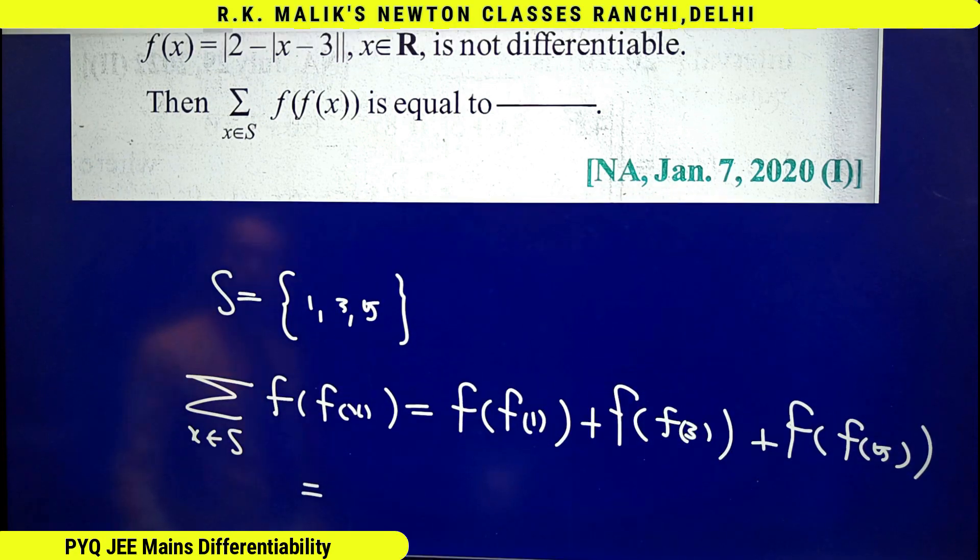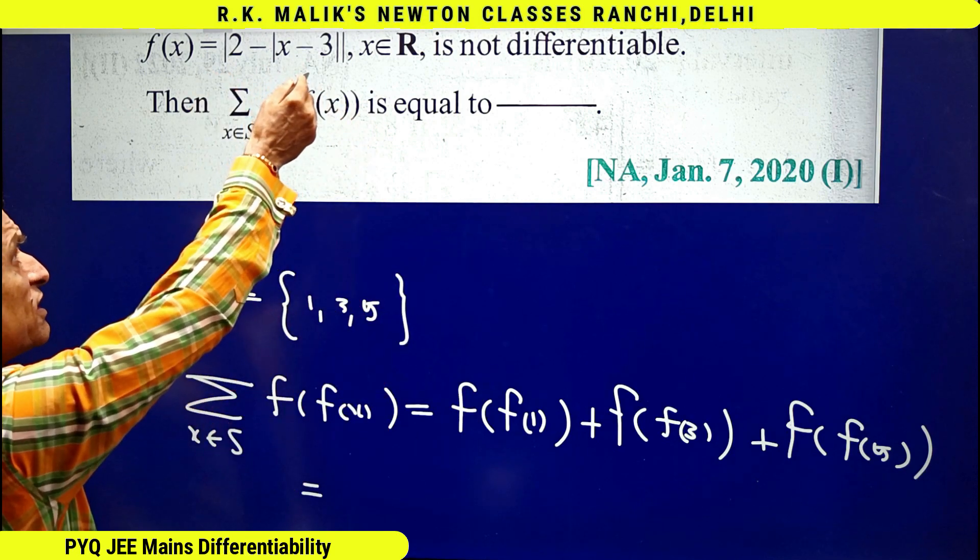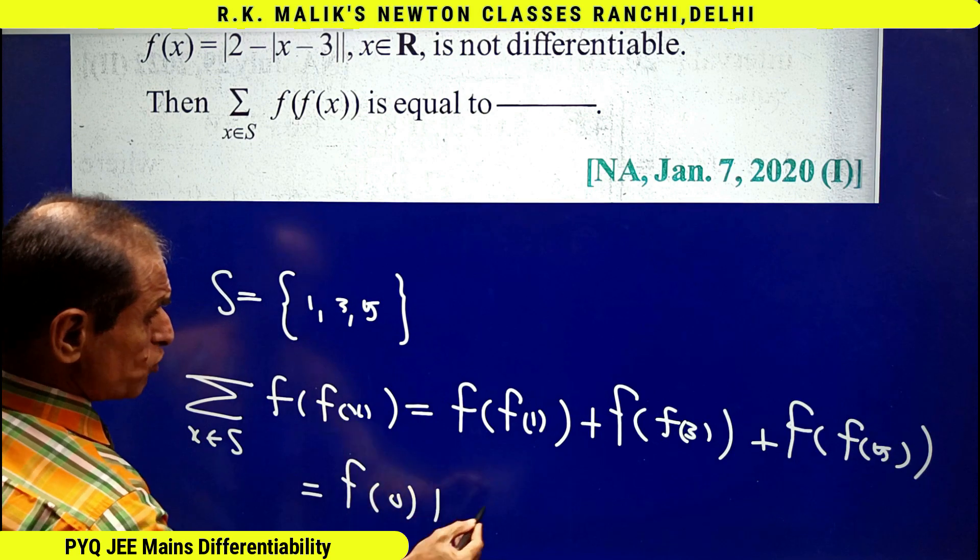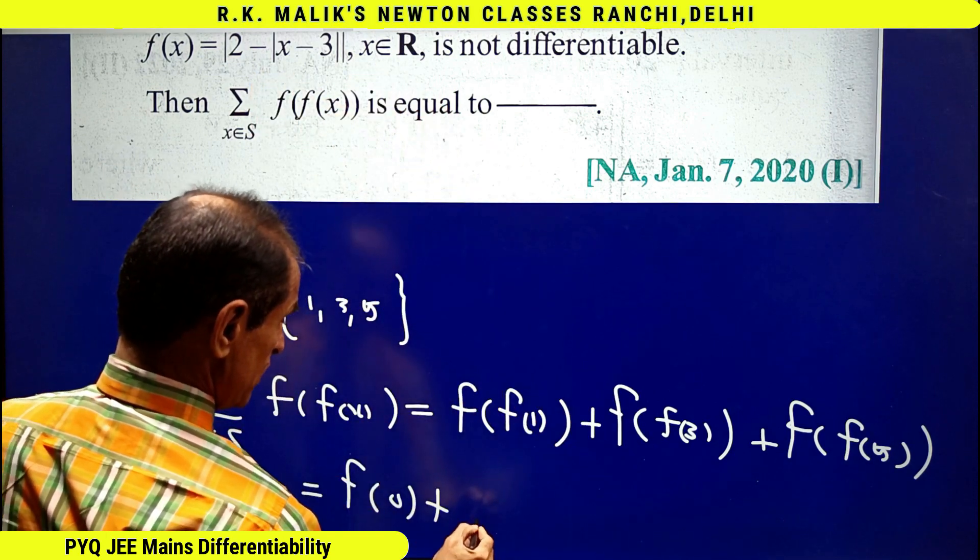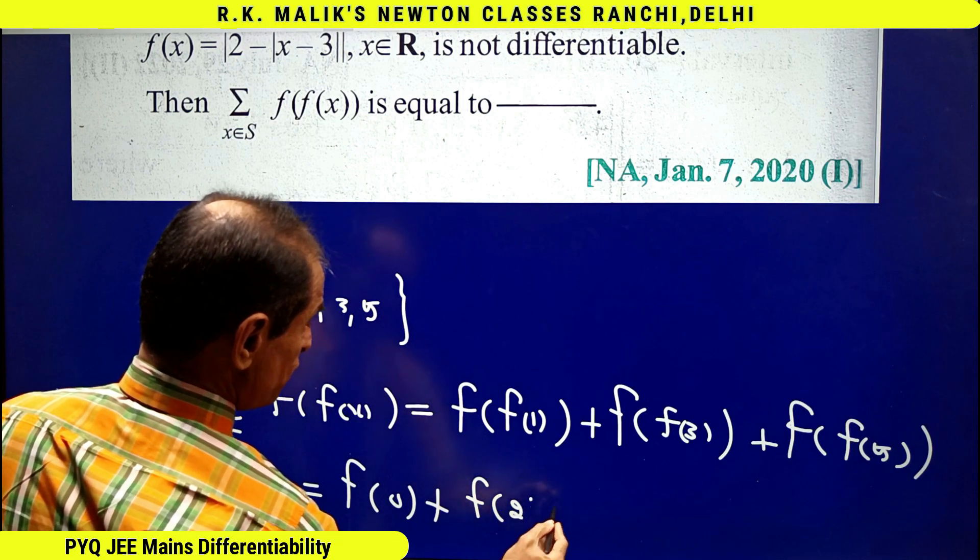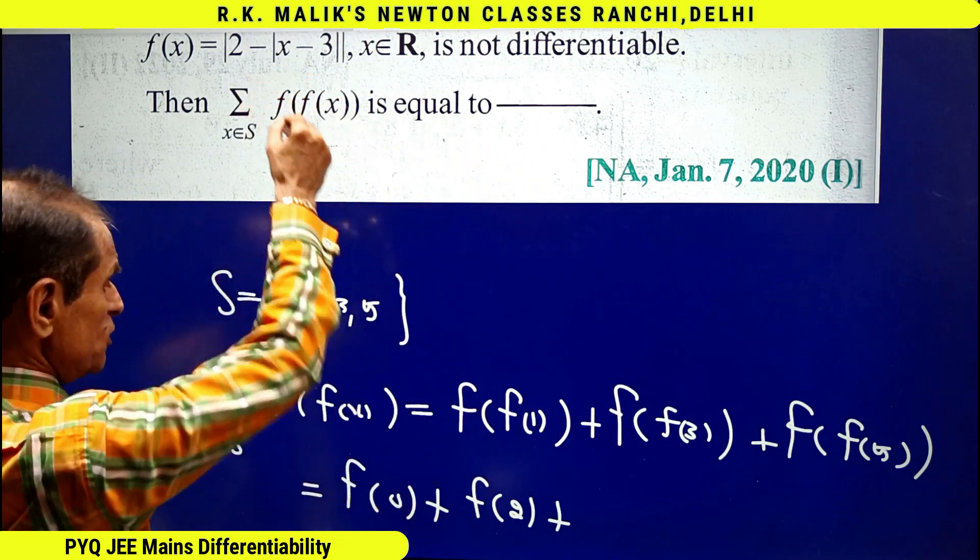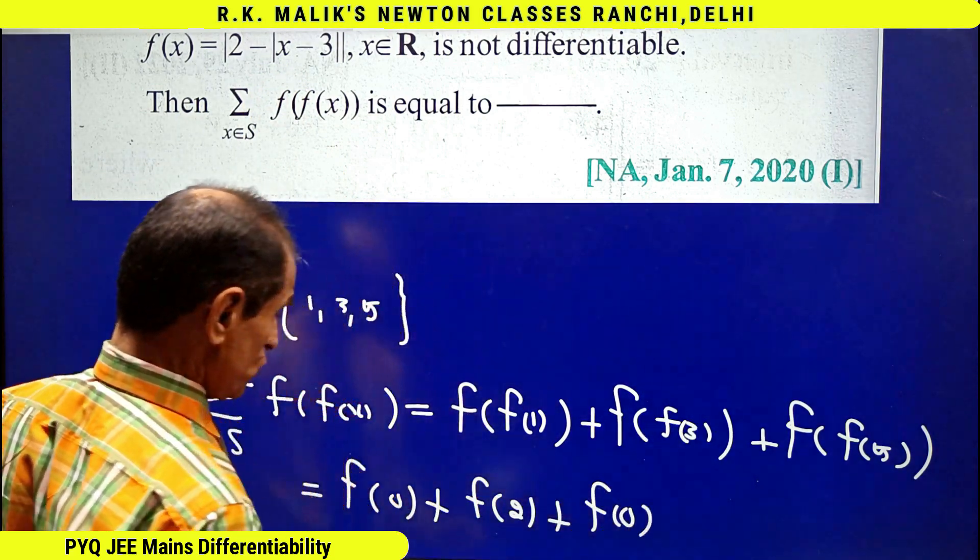Now it is clear that f of 1 is 0, that is I get f of 0. f of 3, I get 2, that is I get f of 2. f of 5, I get 0, hence this becomes f of 0.